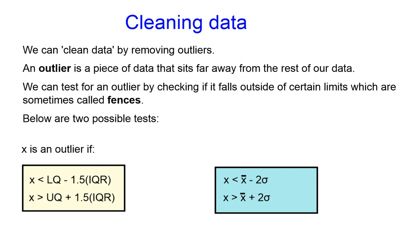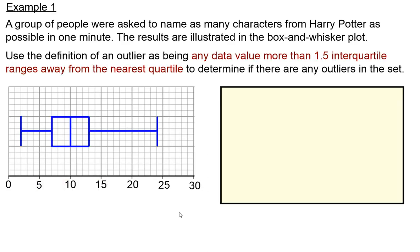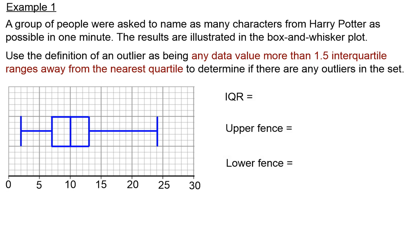In this first example, a group of people were asked to name as many characters from Harry Potter as possible in one minute. The results are shown in a box-and-whisker plot. We're going to use the definition of an outlier as any data value more than 1.5 interquartile ranges away from the nearest quartile. Our first step is to work out the interquartile range, then calculate our lower and upper fences.